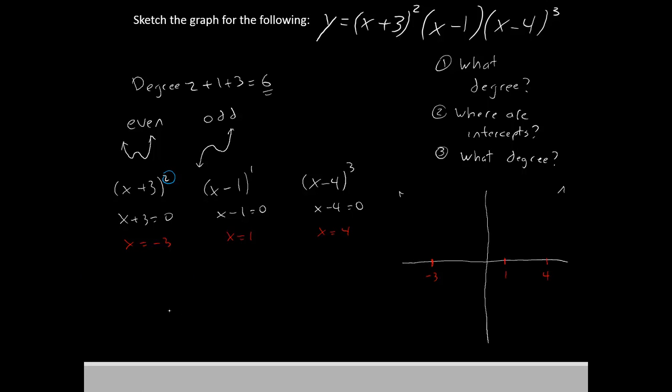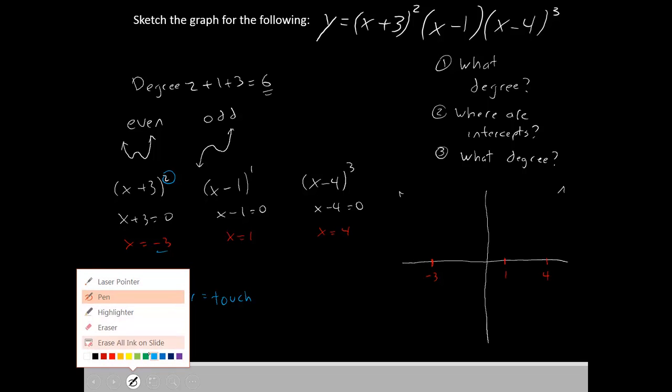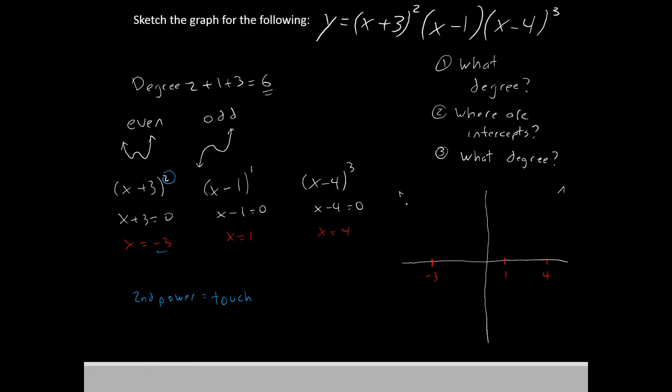Our first piece is second power. And if you have a second power on that piece, that means that the graph will touch but not cross at that coordinate. Our coordinate is negative 3, so let's try to draw that. So at negative 3, the line will come down, it'll touch negative 3, but it's going to come back up. It's not going to cross through.